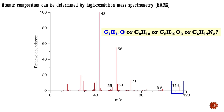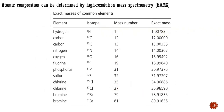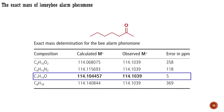The reason that exact masses are non-integers lies in the slight mass difference between a proton and a neutron, and in the fact that electrons have a mass. Such accurate mass measurements are obtained by a technique called high-resolution mass spectrometry. For the bee pheromone, the accurate mass turns out to be 114.1039. The table compares possible atomic compositions for an approximate molecular weight of 114, and the result is conclusive: the exact masses fit the observed exact mass only for the composition C7H14O.